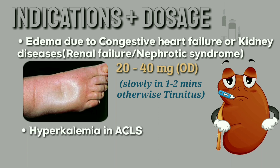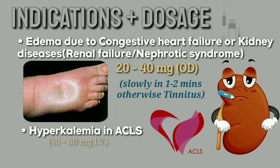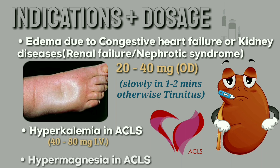Hyperkalemia in ACLS (advanced cardiac life support) requires 40–80 mg IV. And 20–40 mg IV in hypermagnesemia in ACLS over 3–4 hours pro re nata.